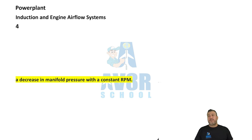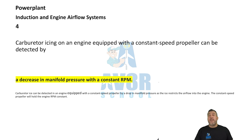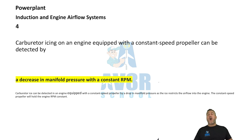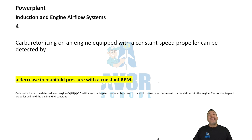Number four: carburetor icing on an engine equipped with a constant speed propeller can be detected by a decrease in manifold pressure with constant RPM.